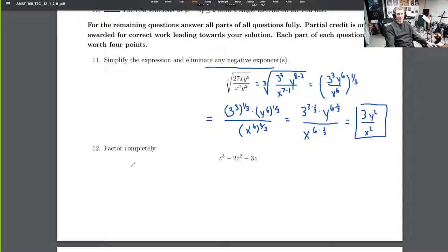Number 12: Factor completely z cubed minus 2z squared minus 3z. I see that all of these have a factor of z - there's no constant term here - so I'm going to pull that out first.